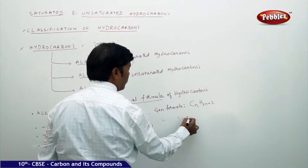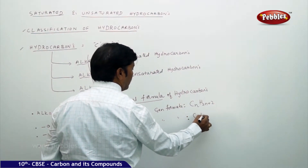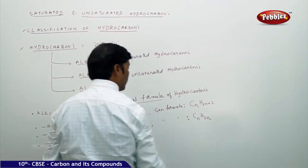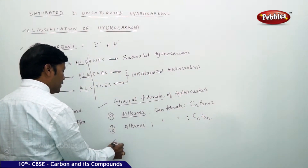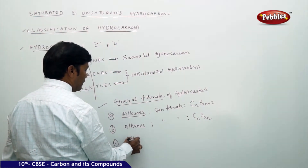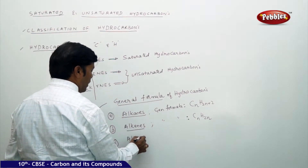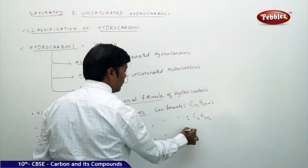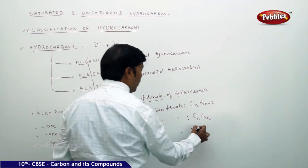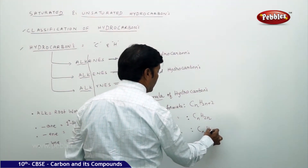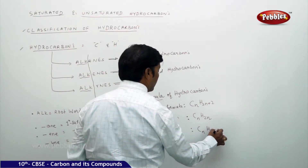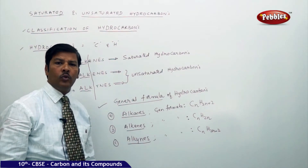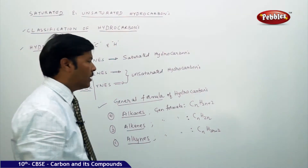The general formula for alkenes is CₙH₂ₙ, and the general formula for alkynes is CₙH₂ₙ₋₂.